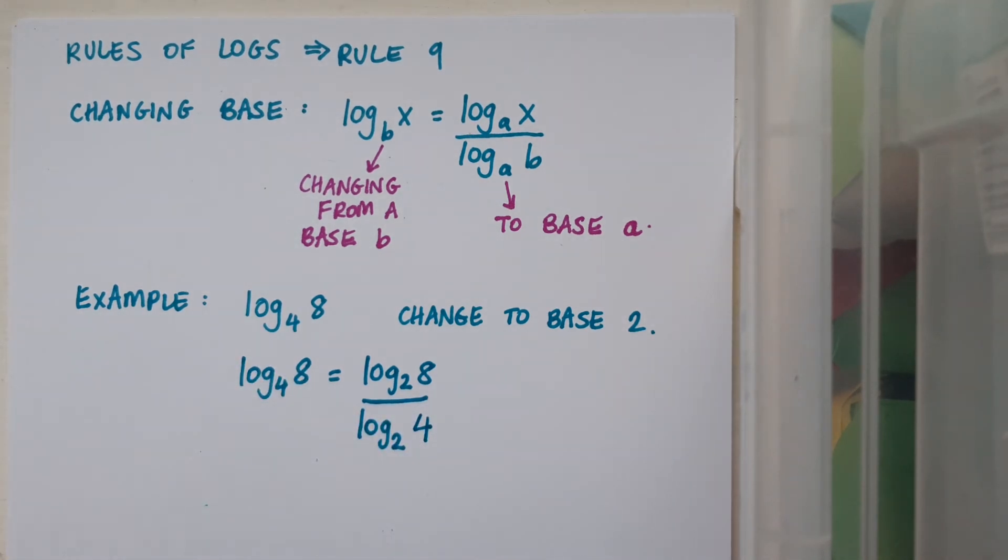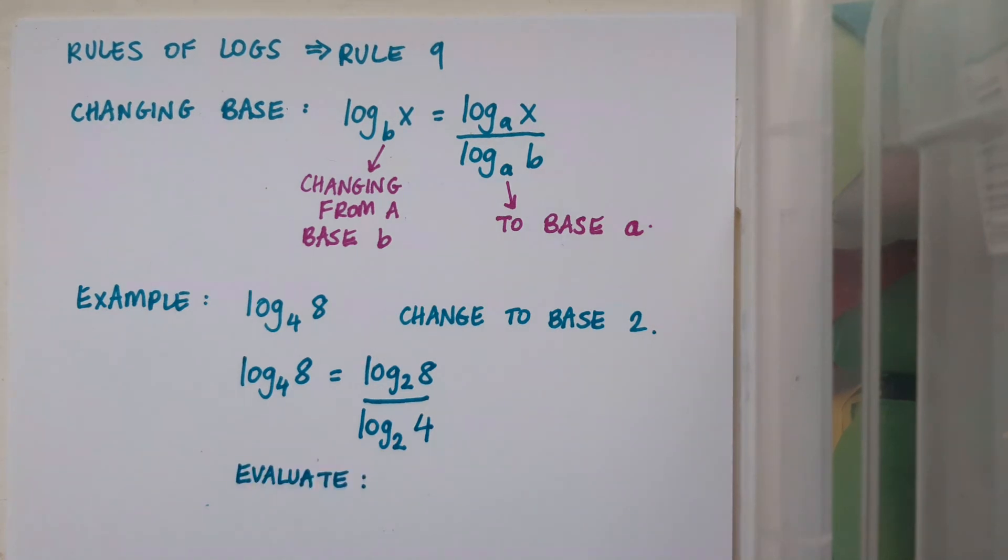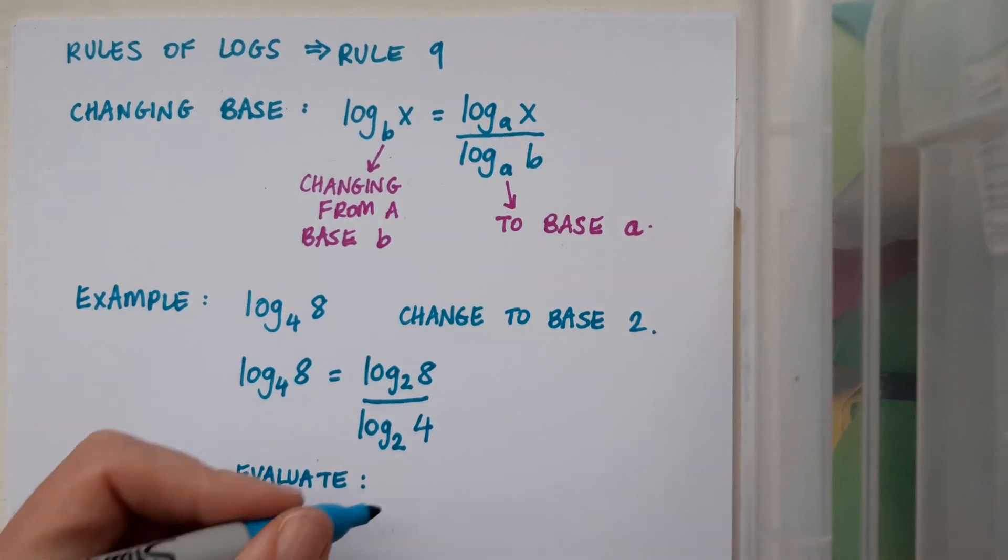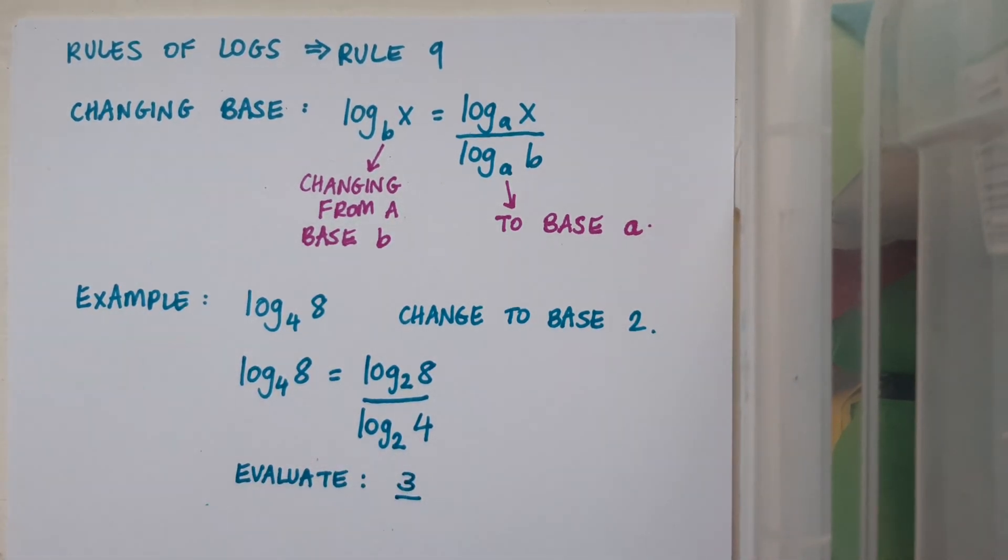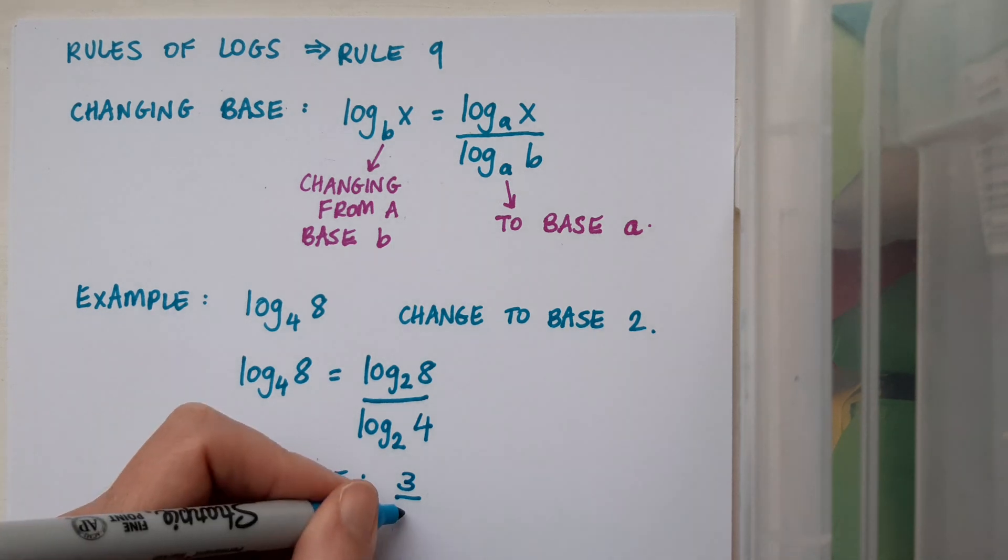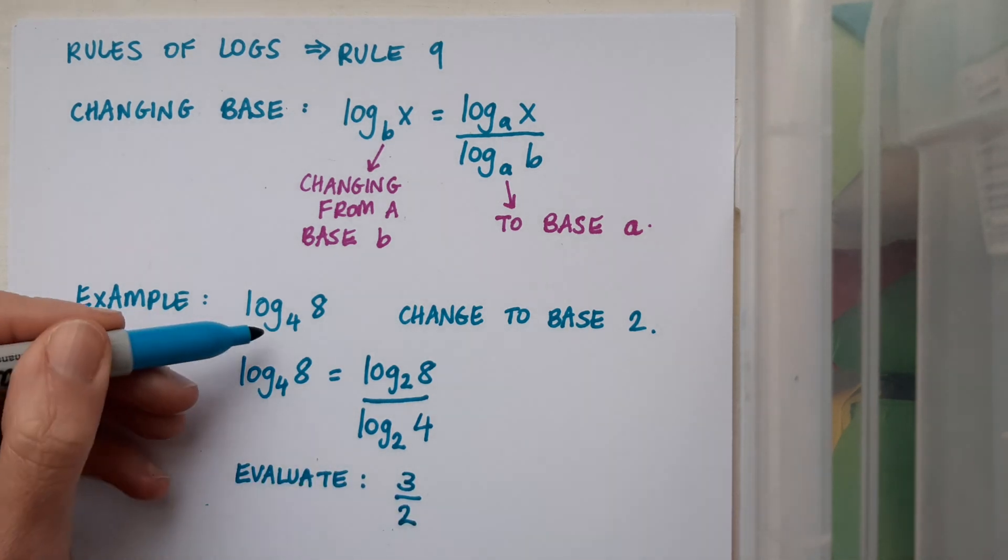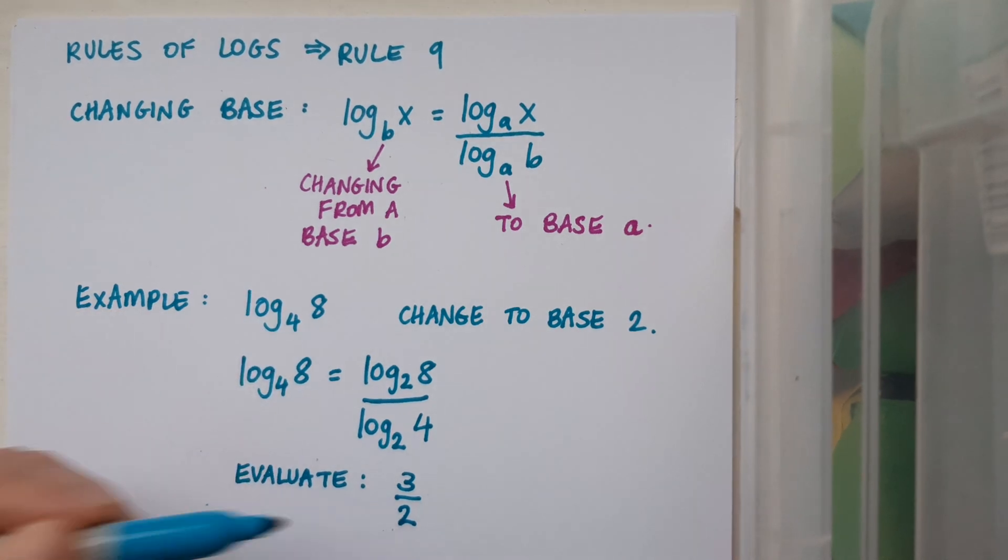Now, if I'm just changing base, I've changed the base, I could continue on and evaluate. If I want to evaluate, well, I can evaluate log to the base 2 of 8, which comes out as 3. And I can evaluate log to the base 2 of 4, which comes out as 2. My answer is 3 over 2. So log to the base 4 of 8 equals 3 over 2.